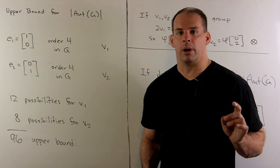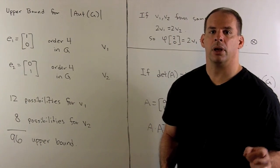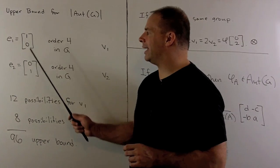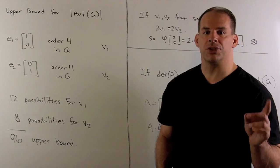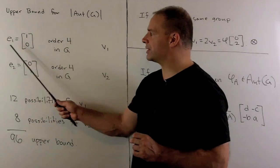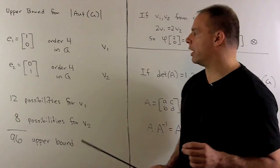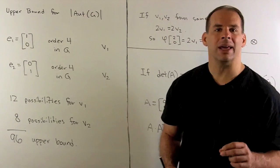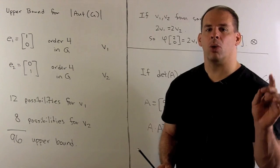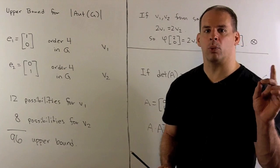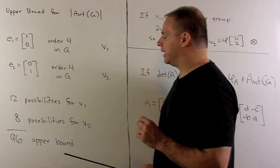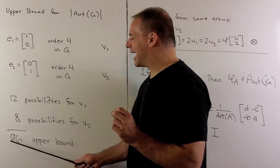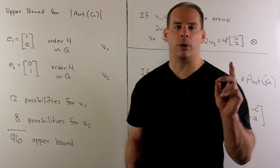So, this is going to be useful in getting an upper bound on the order of the automorphism group. To get an upper bound for the number of automorphisms, we note that E1 and E2 are both of order 4 in our group. So, there are going to be 12 possibilities for where I can send E1, I'll call that V1. Instead of 11 possibilities, we'll have only 8 possibilities for where we can send E2, we'll call that V2. So, that means we're going to have an upper bound of 96 possibilities for automorphisms.